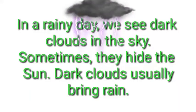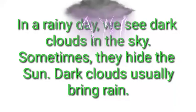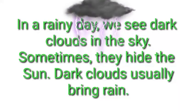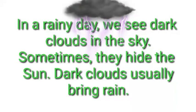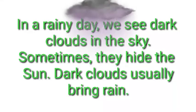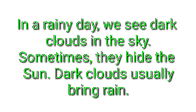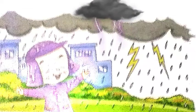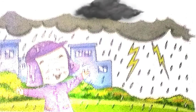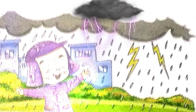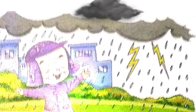On a rainy day, we see dark clouds in the sky. Sometimes they hide the sun. Dark clouds usually bring rain for us. Whenever there is a rainy day, the sky looks very different. We cannot see the sun, we cannot see the stars, we cannot see the moon — because they are hiding behind the dark clouds. You can see this picture of the rainy season.